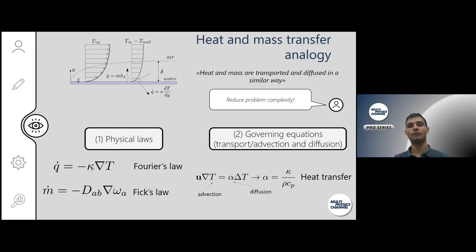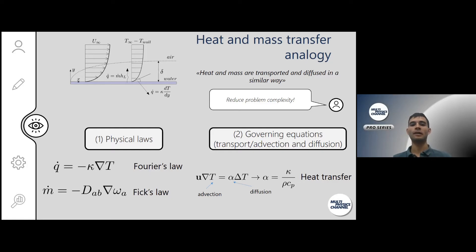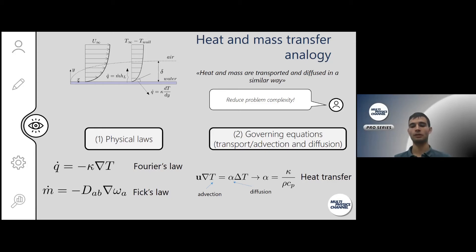This is why we say that heat and mass are transported and diffused in a similar way. If we have a problem involving both processes and we solve one — for instance heat transport and diffusion — then we have quantitative values of how mass will diffuse in that same problem. In the end we are reducing complexity because we don't have to solve all three groups of equations, just the fluid flow and the heat transfer problem.